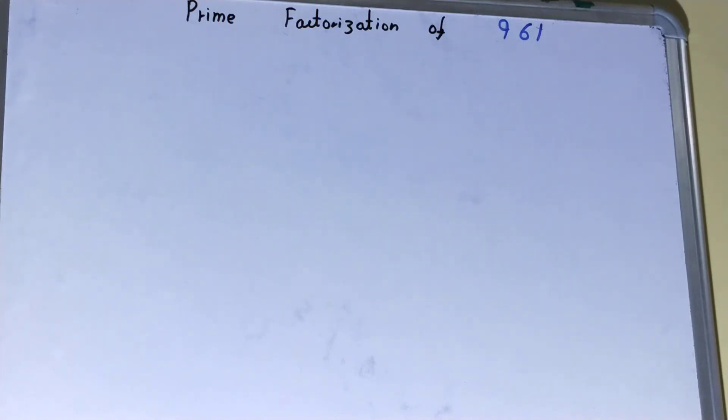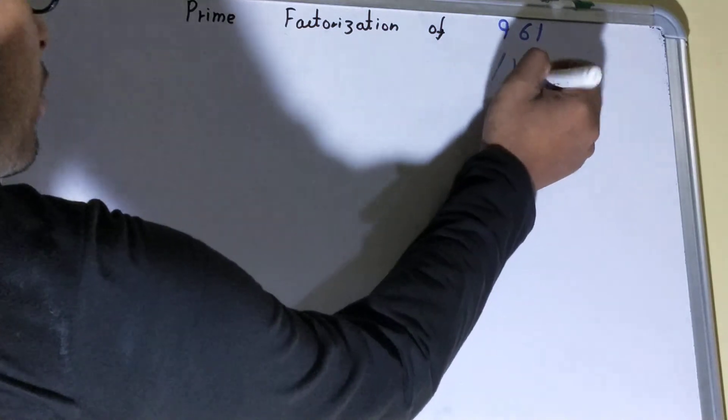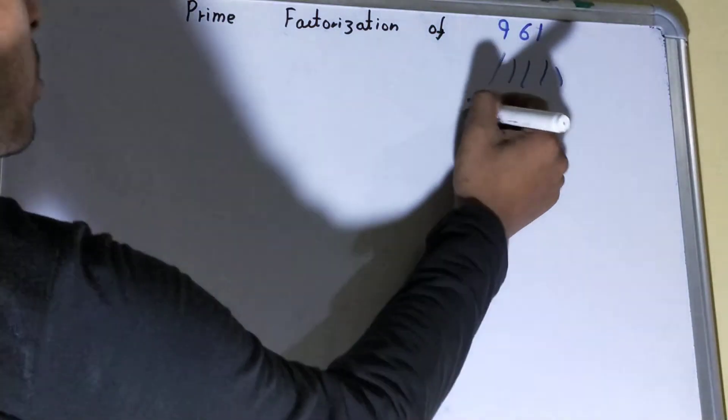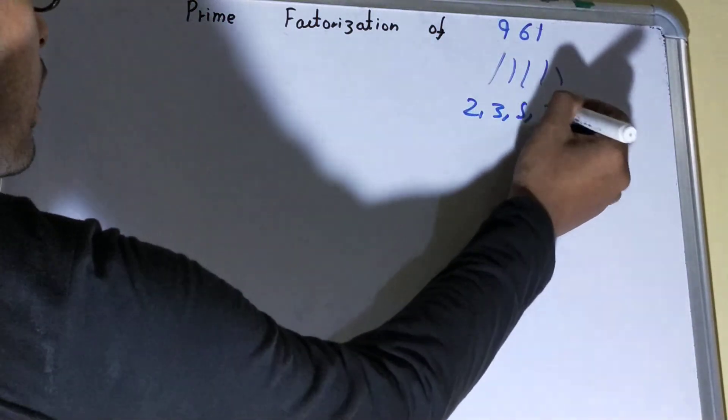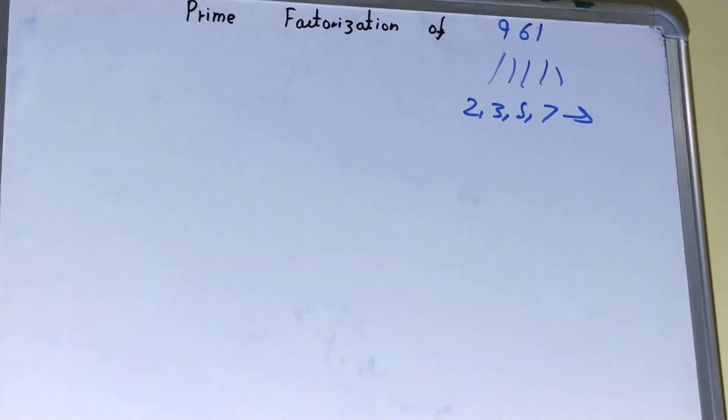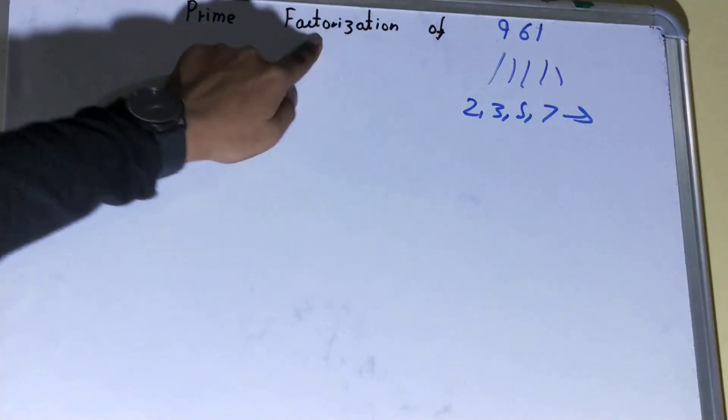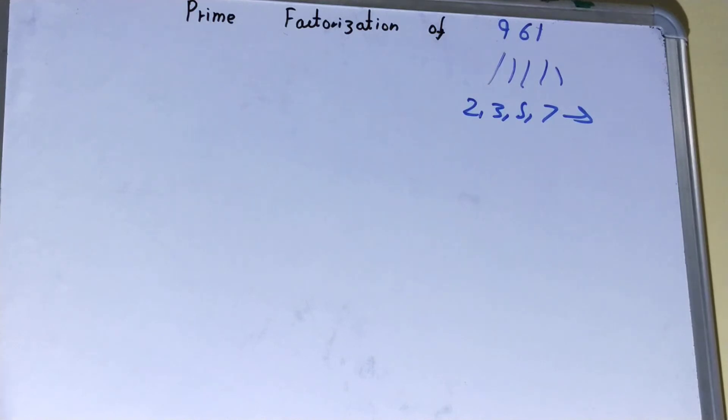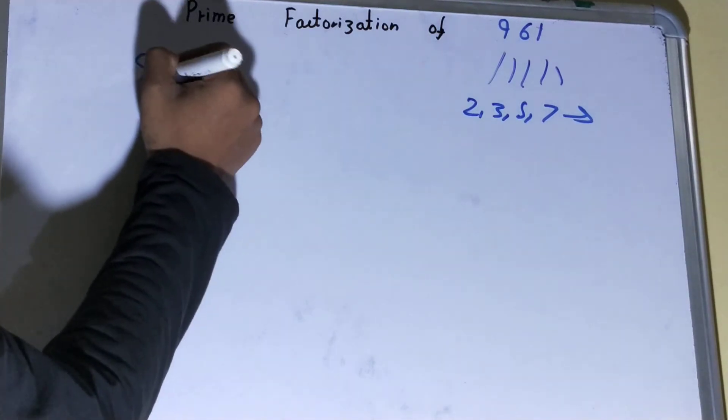primes or a set of primes. So we need to factorize this 961 into a group of primes like 2, 3, 5, 7, and so on. The process of converting the number into a group of primes is called prime factorization. Now let's quickly prime factorize this 961.